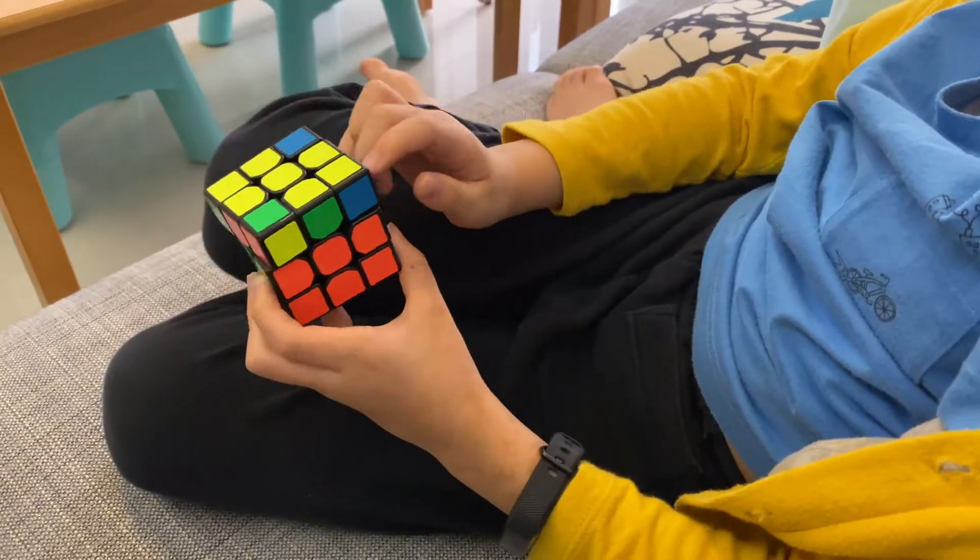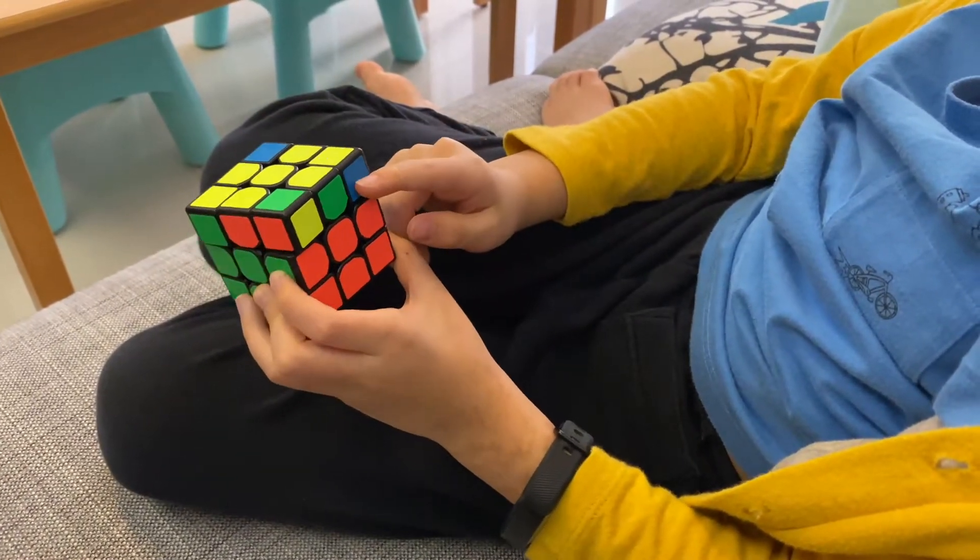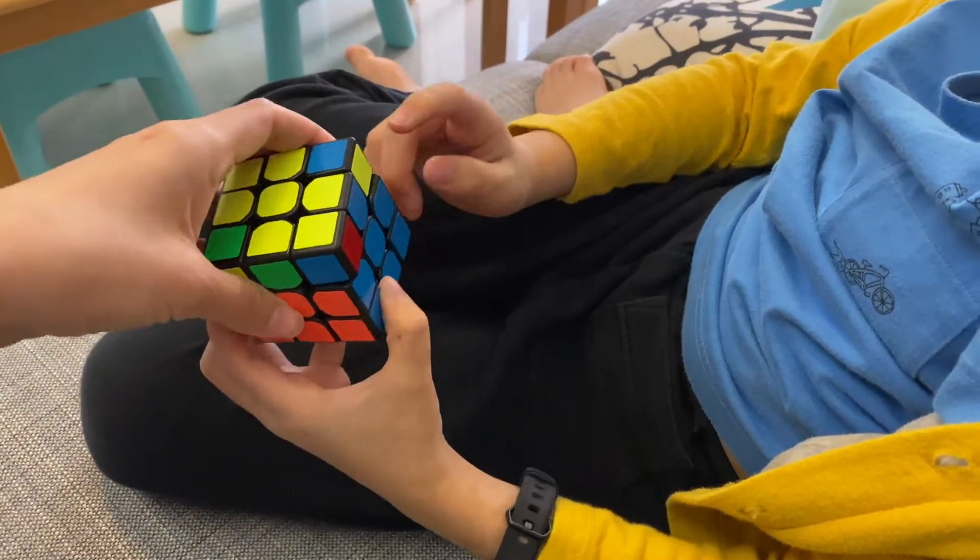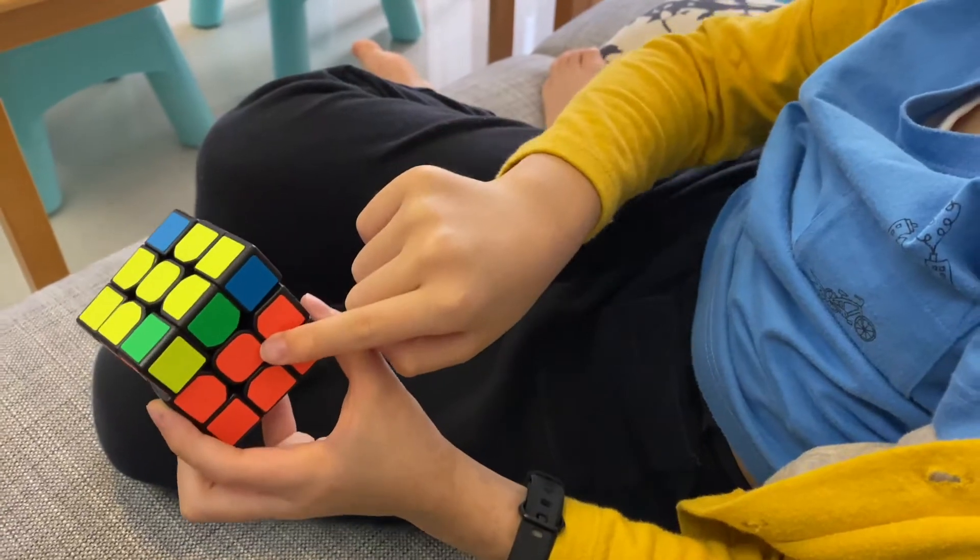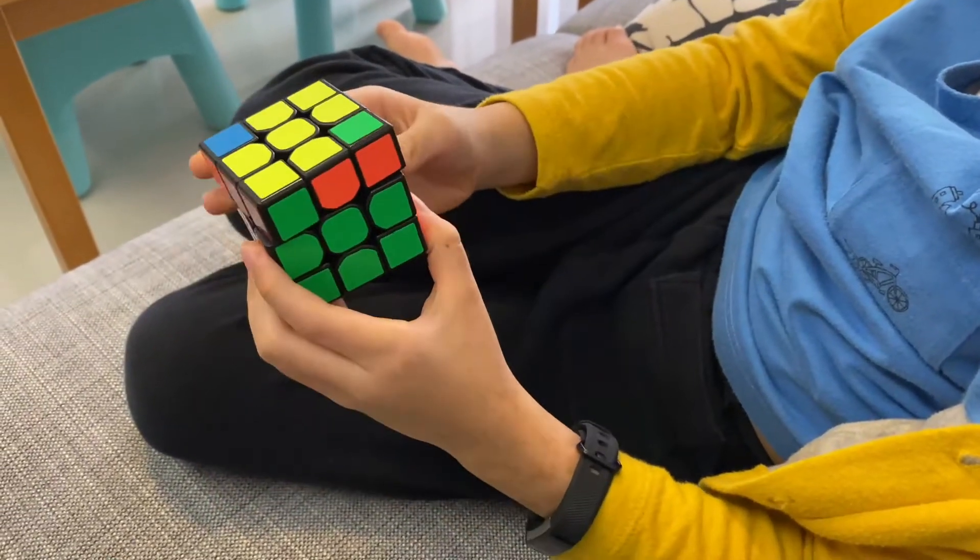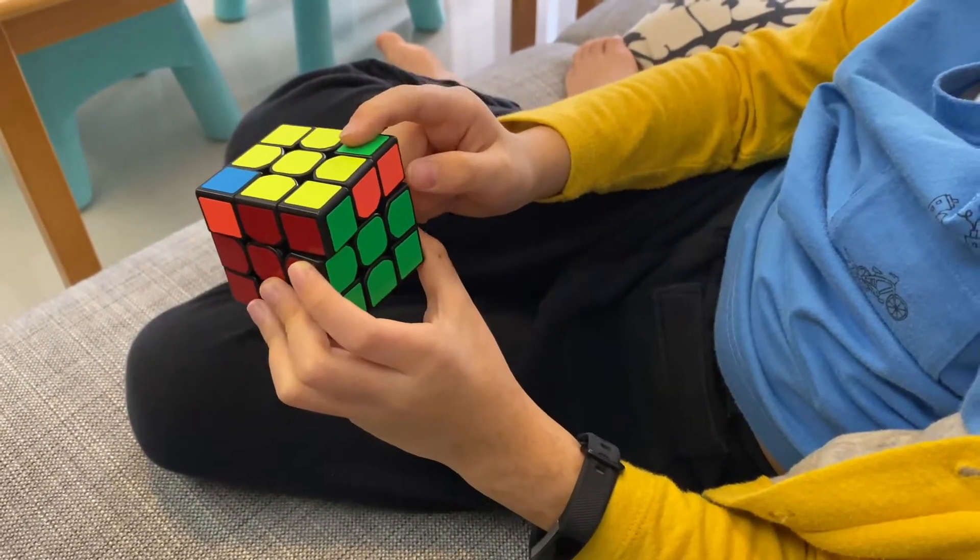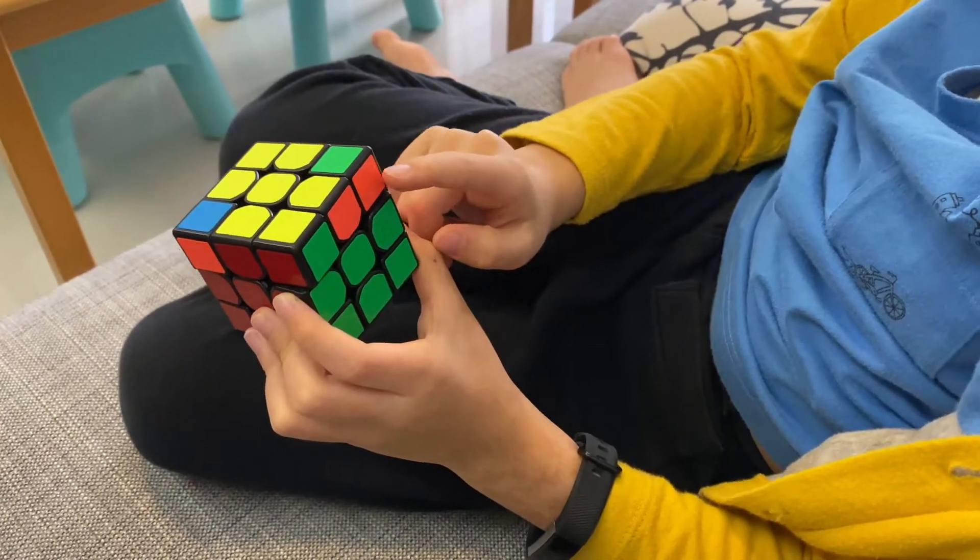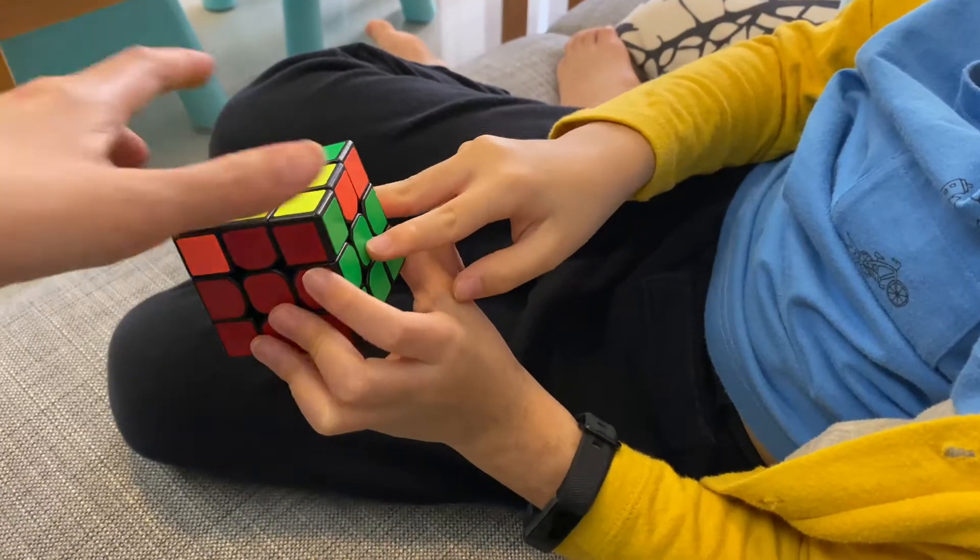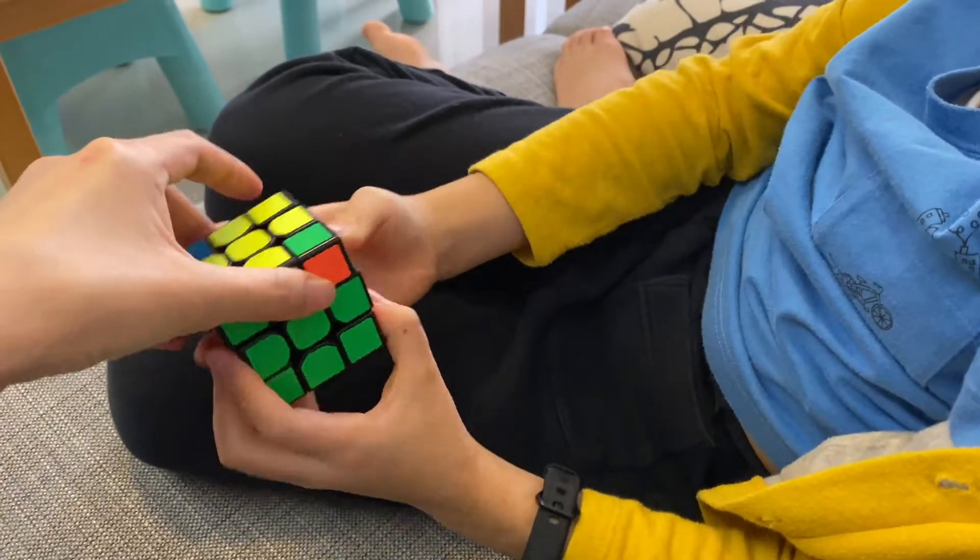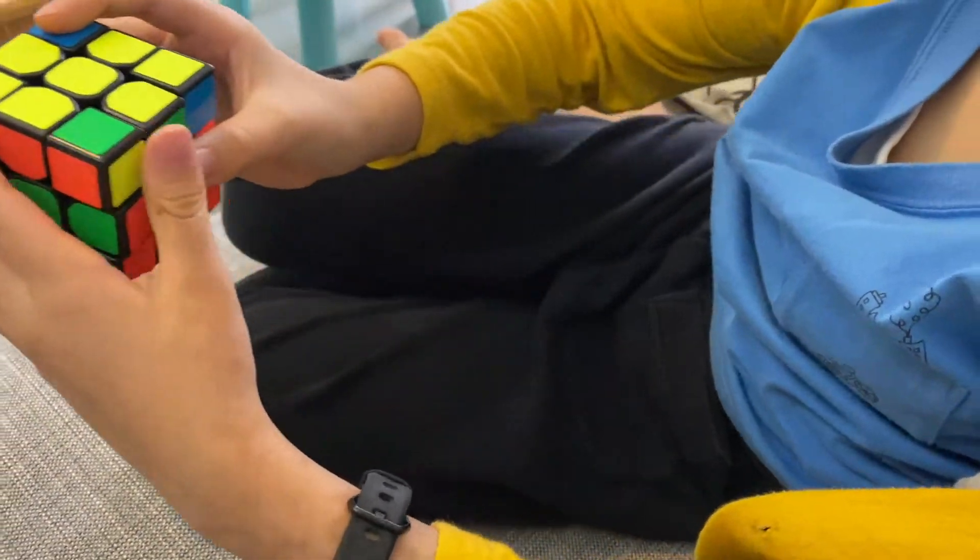And this one, blue and red, it's not between the blue and red centers. So let's look at this one. Green and orange. It's between the green and orange centers.